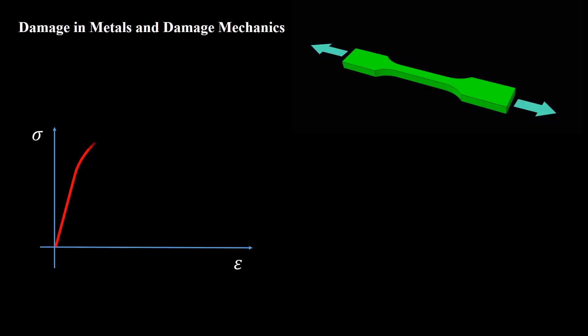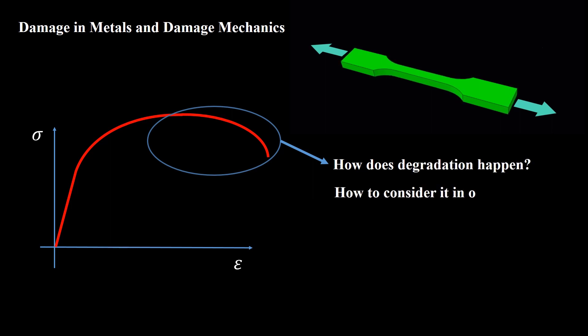Welcome to this video. This video explains mechanisms of damage initiation and evolution in metals and demonstrates basics of damage mechanics. Probably you have seen the softening part of the stress-strain curve. How does degradation happen? How to consider it in our analysis?